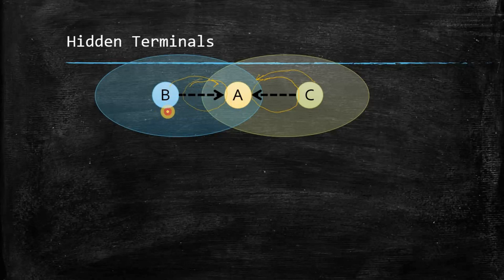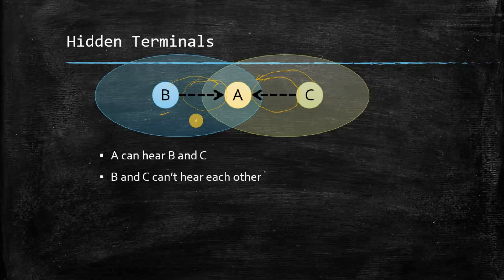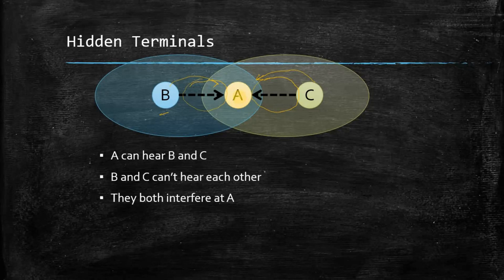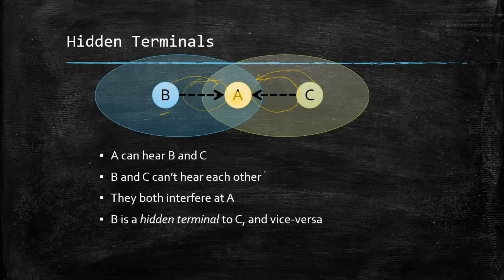This is called the hidden terminal problem. B is hidden from C and C is hidden from B — A can hear both B and C, but B and C cannot hear each other. They both interfere at A, and the collision that occurs at A is called the hidden terminal problem. B is a hidden terminal to C and vice versa. Carrier sensing at the sender is useless in this case.